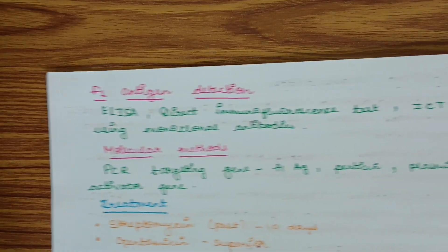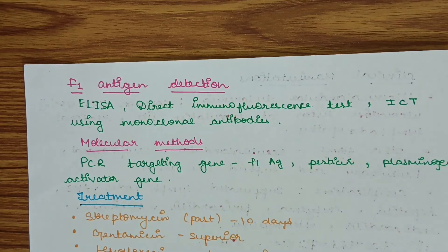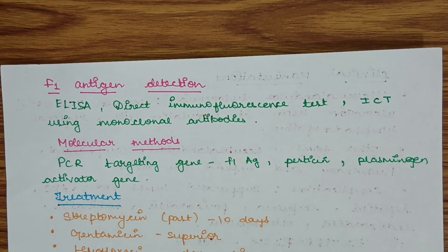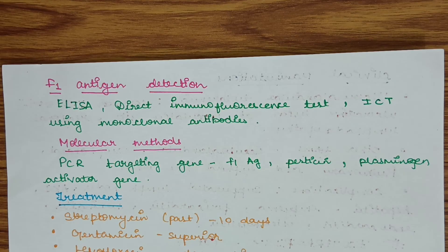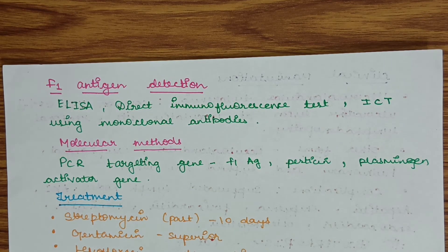Antigen and antibody detection: antigen detection is done by direct immunofluorescence test or immunochromatographic test using monoclonal antibodies. Molecular methods are done by PCR, with gene targets being the F1 antigen gene, pesticin gene, and plasminogen activator gene.